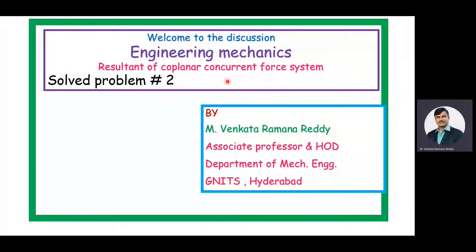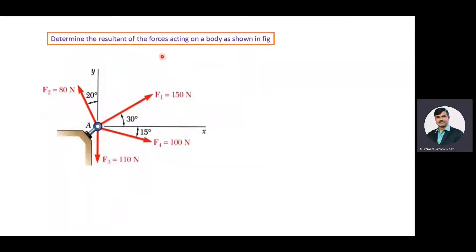Now we will enter into the problem. The given problem is: determine the resultant of the forces acting on a body as shown in figure. Here, A is the body. On this body, the forces: F1 is equal to 150 newton acting at an angle of 30 degrees to the X axis; F2 is equal to 80 newton acting at an angle of 20 degrees to the Y axis; F3 is equal to 110 newton acting vertically down along the Y axis; and F4 is equal to 100 newton acting at an angle of 15 degrees to the X axis.